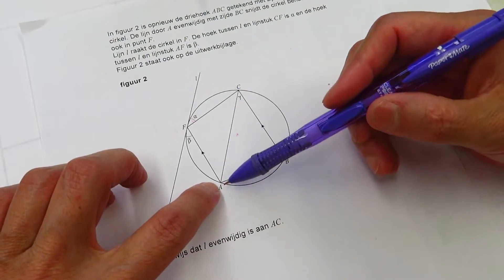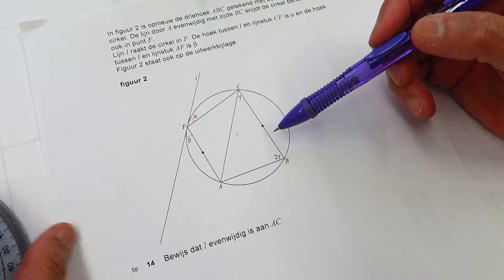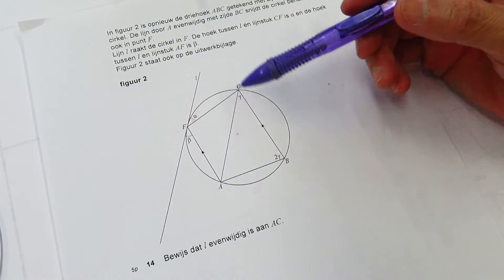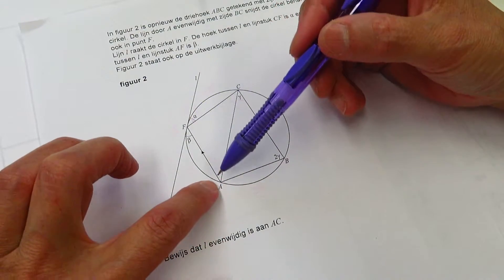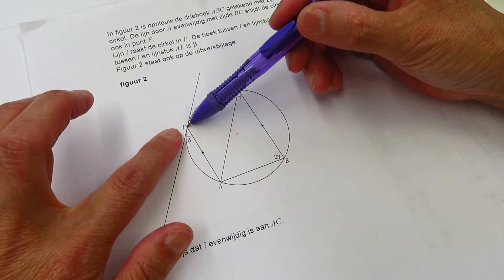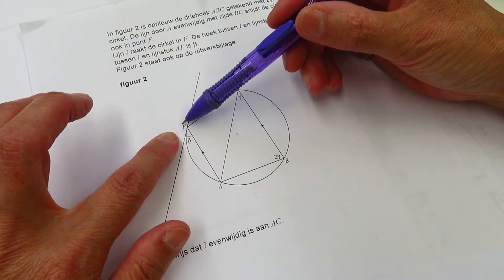Through the point A, we draw a line parallel to BC, and we draw the line. This line touches the circle and intersects with the circle at F.